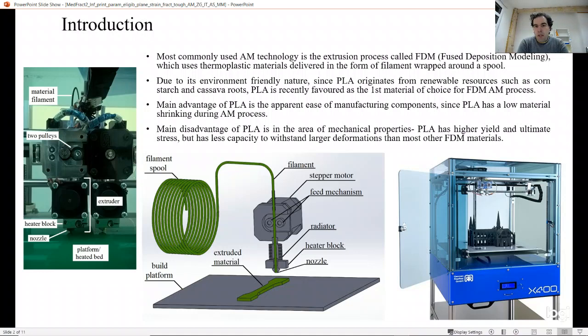This PLA material is nowadays probably the most used material in this technology because of its origin. You can produce this material from cornstarch, cassava roots, or some other renewable resource. So it is a biodegradable material.